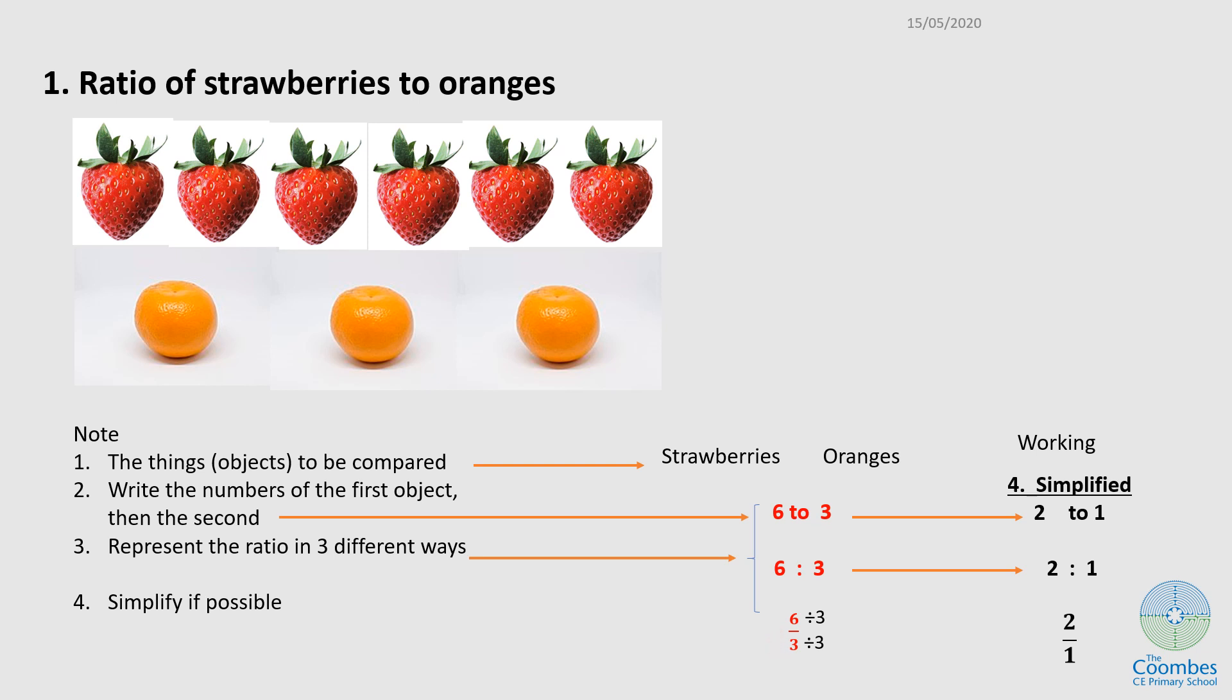Now, the last thing to do is to simplify if possible. In this case, I can see there is a common factor, three. So I divide the top number by three and then the bottom number by three. My simplified version is here, and I can write it in three different forms as well: two to one, two is to one, or two over one. These are the three ways you can write ratios.